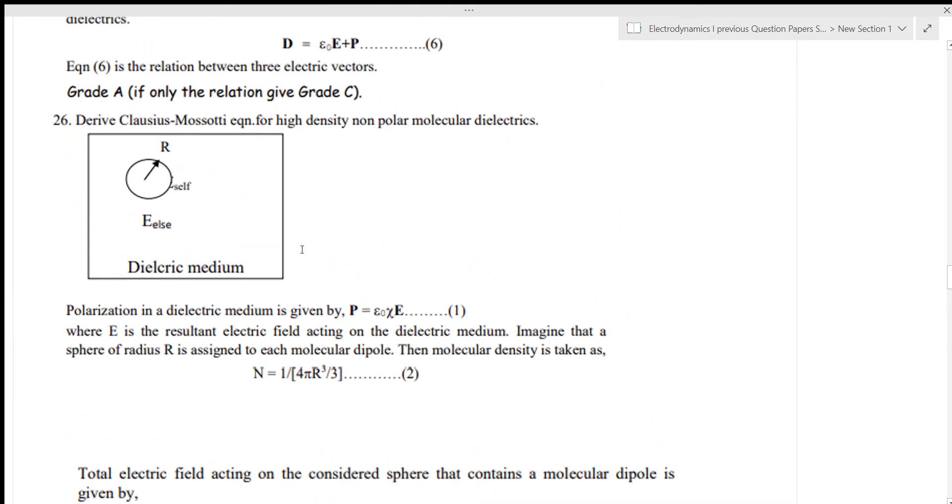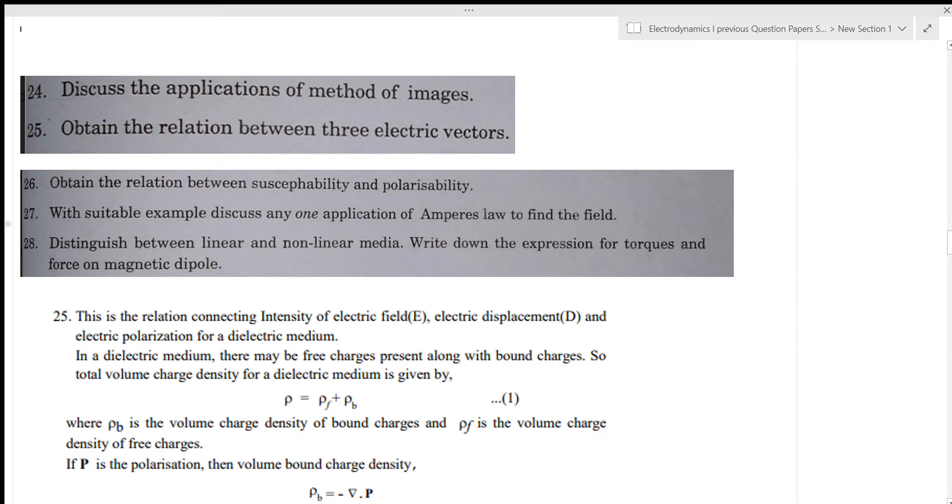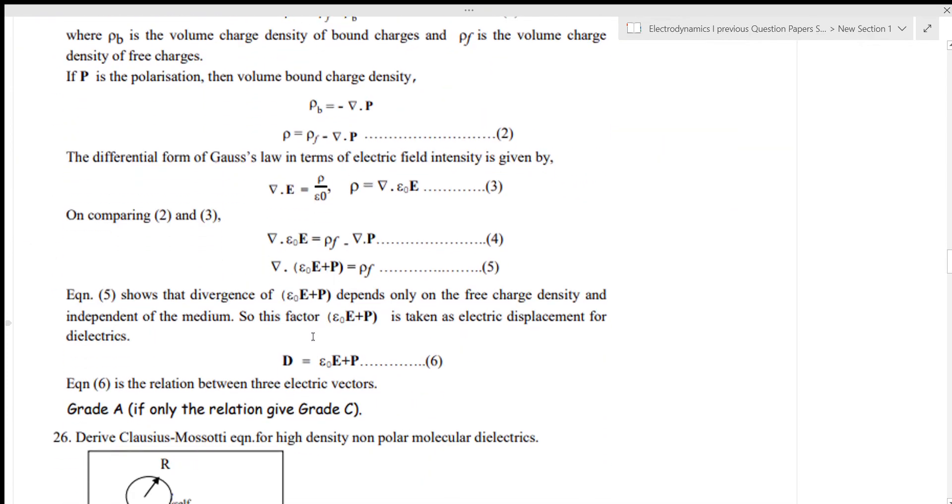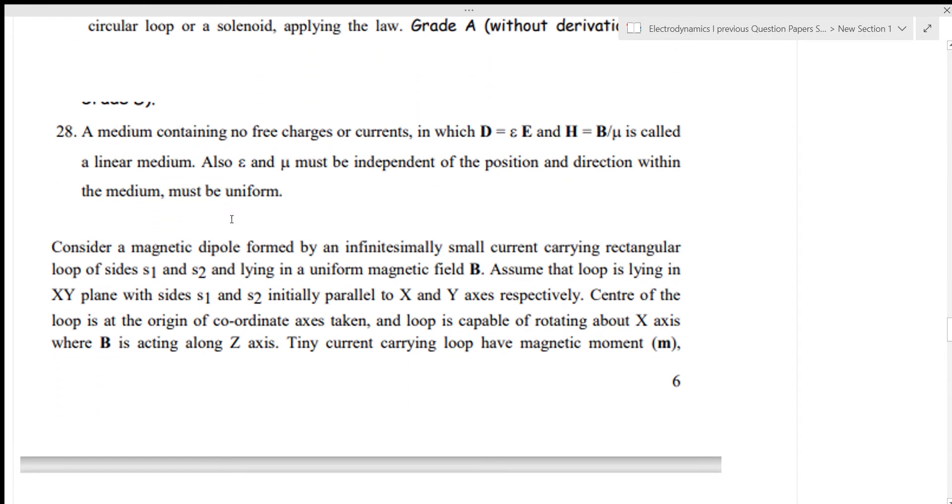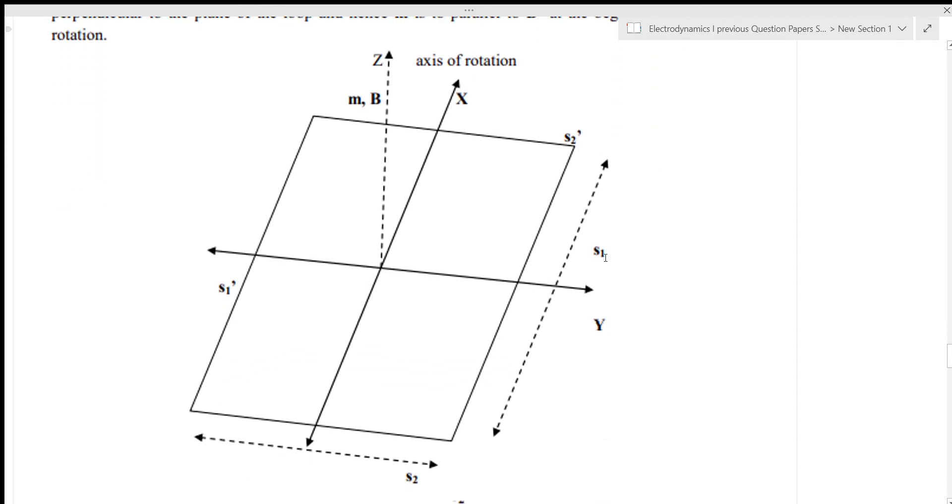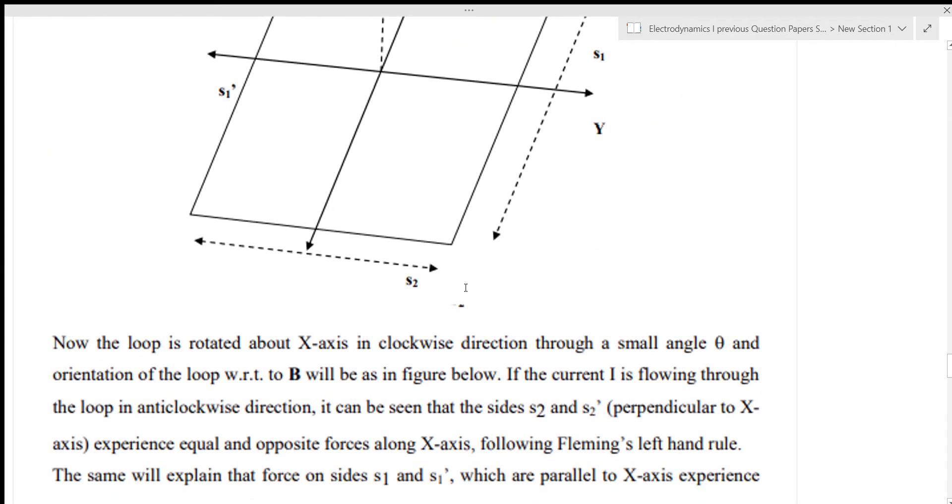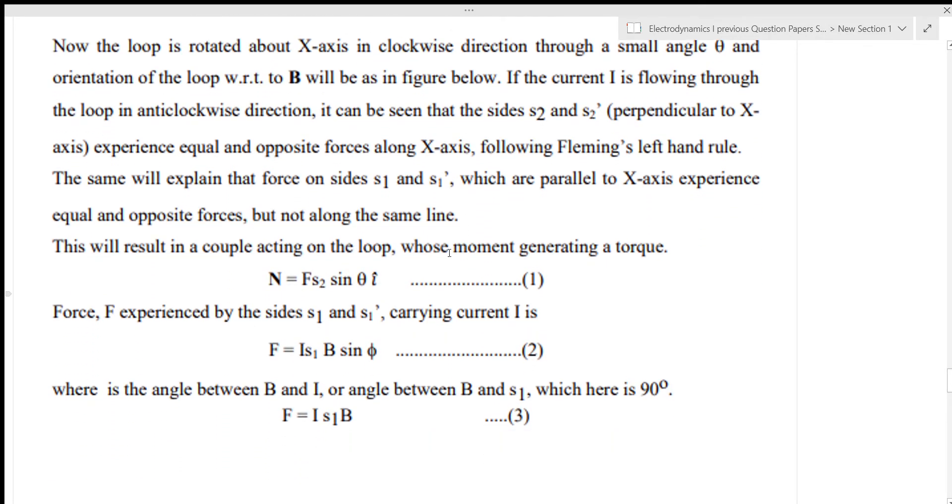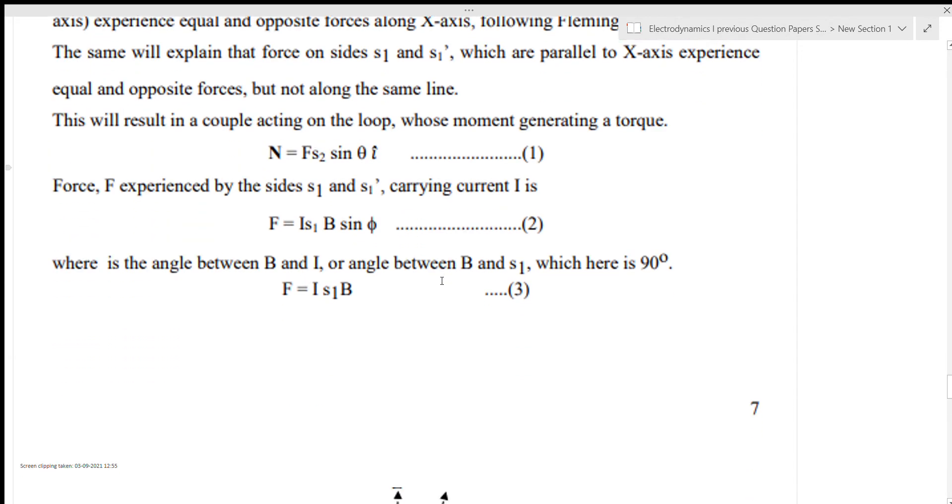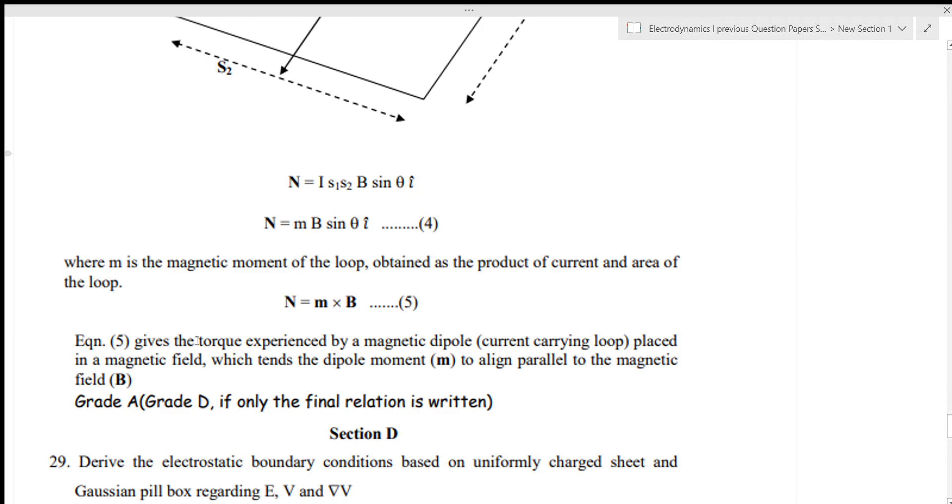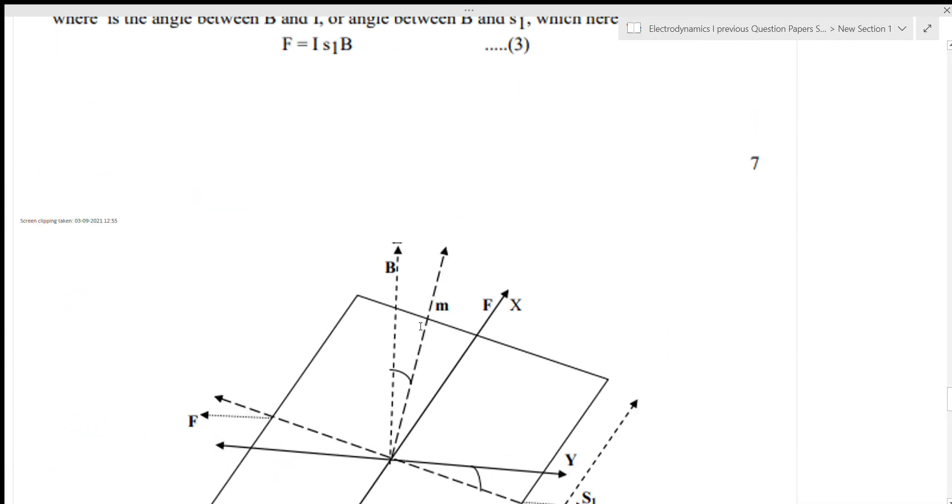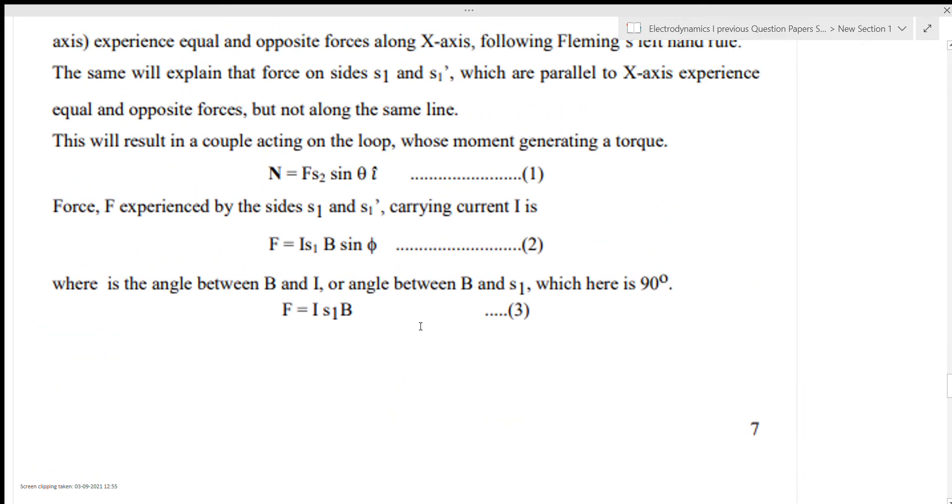Distinguish between linear and non-linear media. Write down the expression for torque and force on a magnetic dipole. If you have linear and non-linear electric media, you can write the equation for torque. The equation is n equals m cross B. You can write down the derivations from the text.